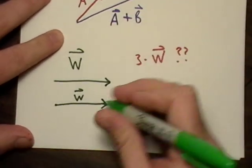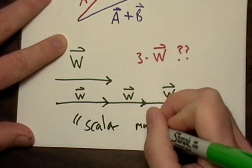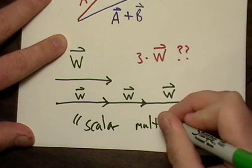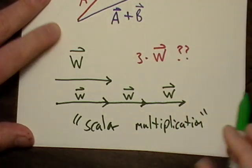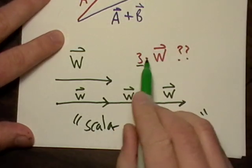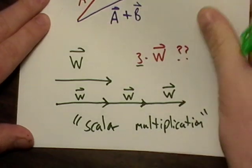We call this, we call that because 3 is just a scalar, W is a vector. So that's what we call scalar multiplication.